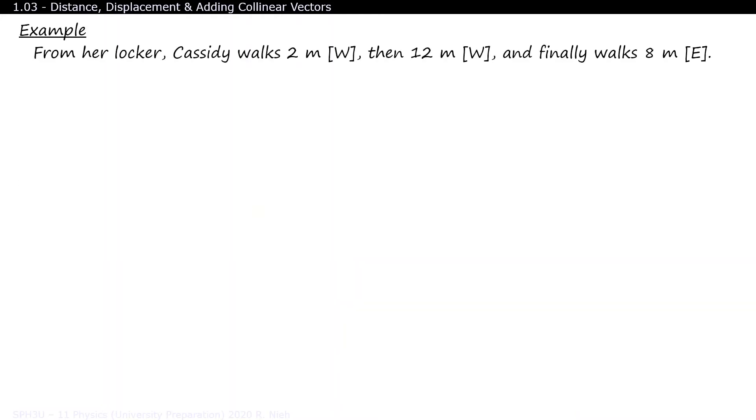Here's an example, a girl named Cassidy walks 2 meters west, then 12 meters west, and finally walks 8 meters east. What is her total distance of travel? Good. 2 plus 12 plus 8 equals 22.